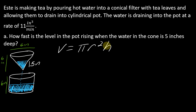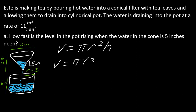With related rates problems, take a moment to think about what is changing and what is not changing. For a cylinder, the radius is constant throughout — it never changes. So r equals 3 here. Whenever you have a letter that's not changing, it's a constant and you plug it in. So plugging in 3 gives us V = 9πh.